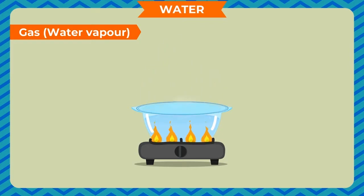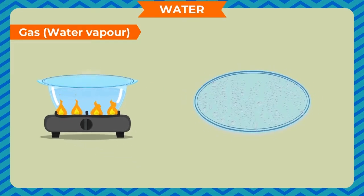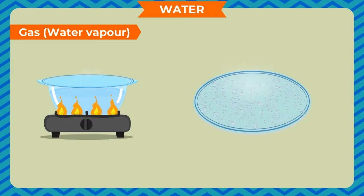Ask any elder to hold a cool plate over water vapor. In a few minutes, we will see many drops of water deposited on the plate. When water vapor touches the surface of the cool plate, it changes into water drops. The process of conversion of water vapor into water drops is called condensation.